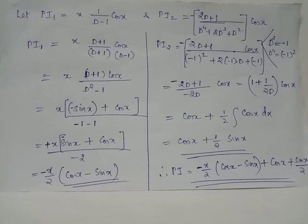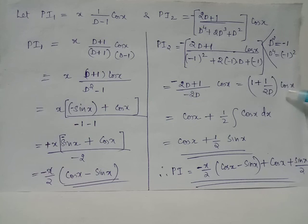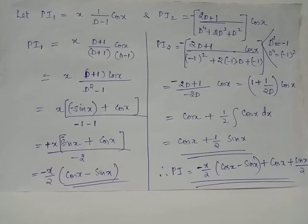Thus PI2 = -(2D + 1) / (1 - 2D - 1) acting on cos(x) = -(2D + 1)/(-2D) acting on cos(x). The negative signs cancel, giving (2D + 1)/(2D), which can be written as 1 + 1/(2D). So PI2 = (1 + 1/(2D)) acting on cos(x) = cos(x) + (1/2)·∫cos(x)dx = cos(x) + (1/2)·sin(x). Therefore PI = PI1 + PI2 = -x/2·(cos(x) - sin(x)) + cos(x) + (1/2)·sin(x).